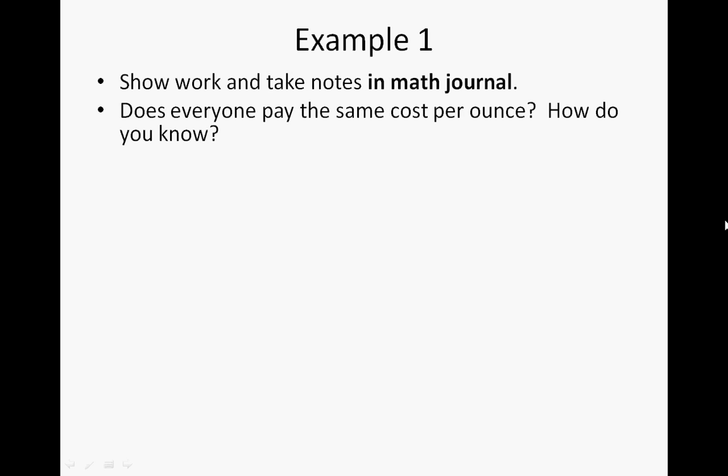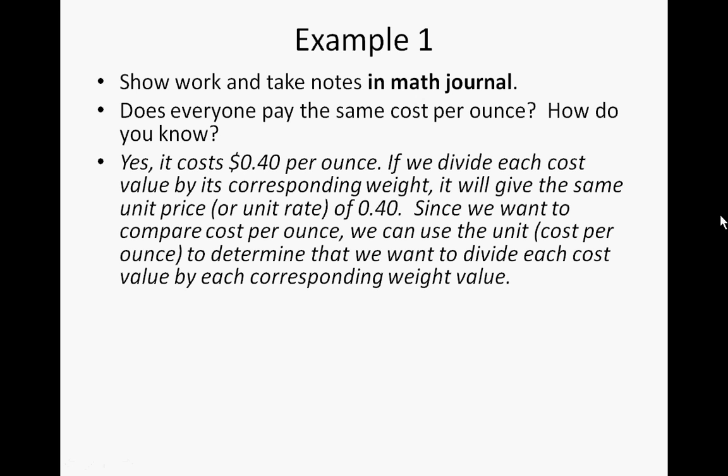Once you've answered this question, what you should have said hopefully was yes — everyone does pay the same cost per ounce. It costs about 40 cents per ounce. And if you divide each cost value by its corresponding weight, it will give you the same unit price or unit rate of 40 cents. Since we want to compare the cost per ounce, we can use the unit rate. In this case, division will give us our unit rate and it happens to be proportional.